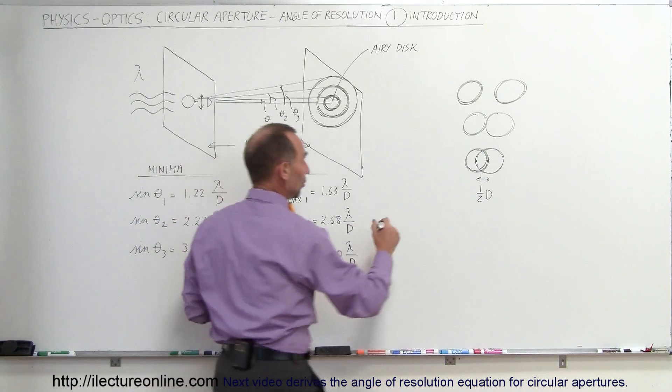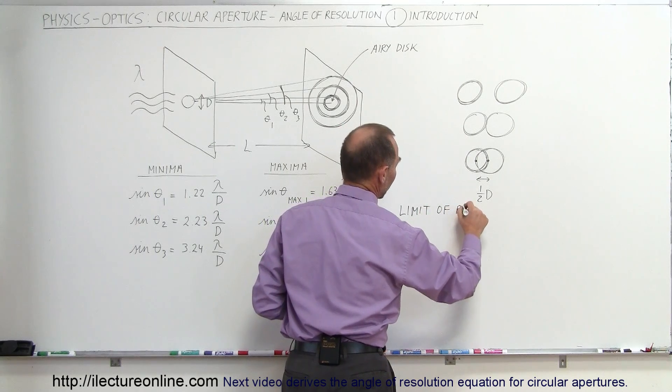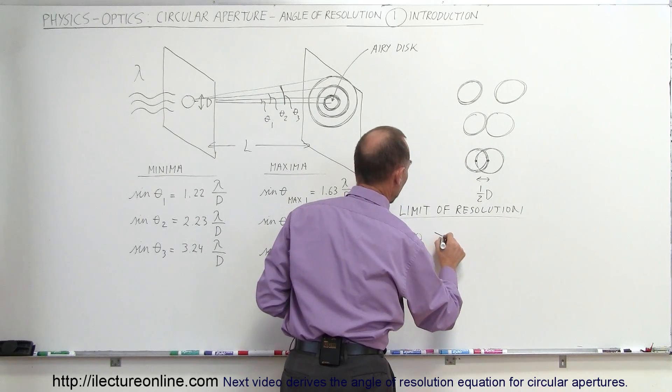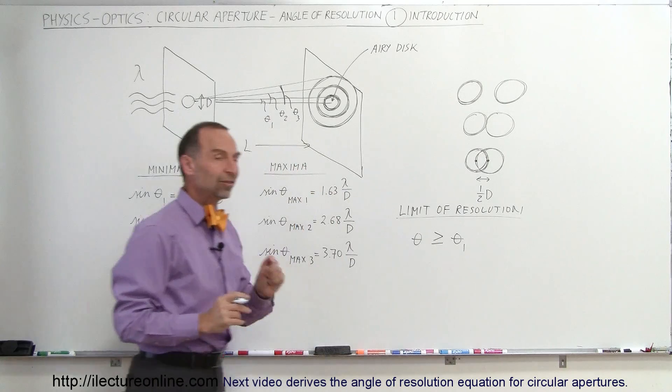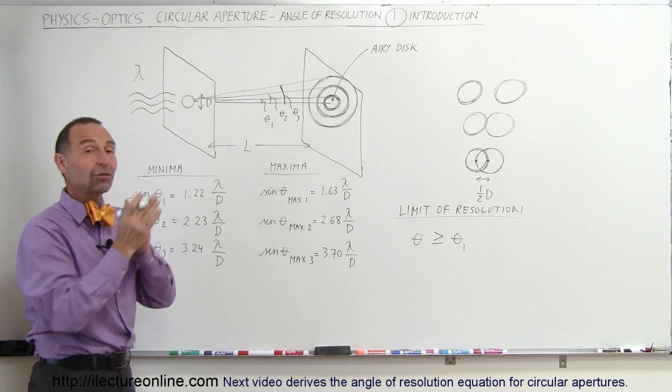So, that means that the limit of resolution is such that the angle theta must be greater than or equal to theta sub 1, because that represents half the angular size of the central maximum.